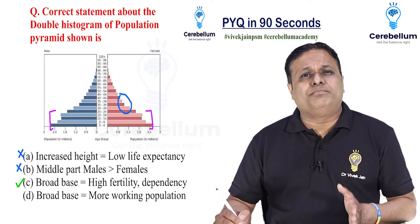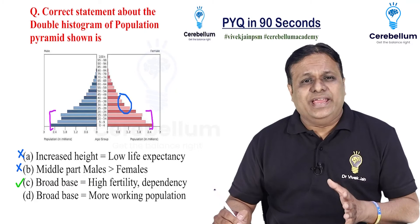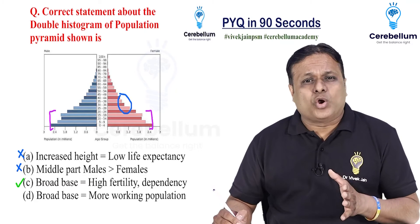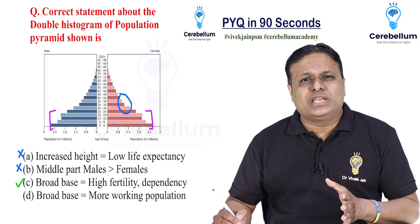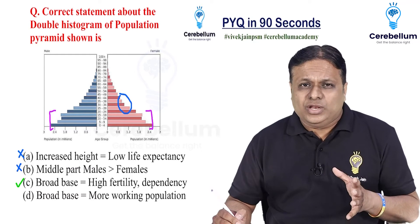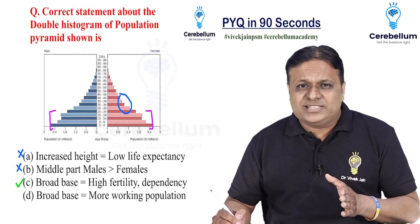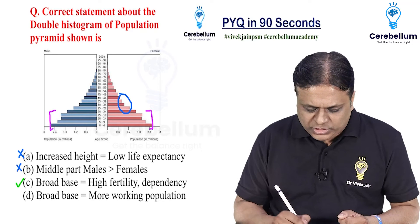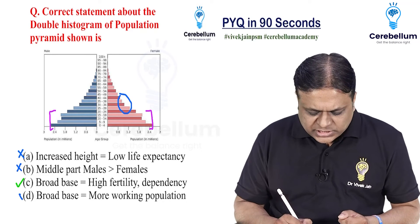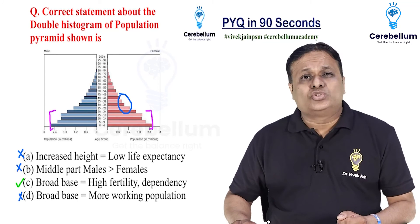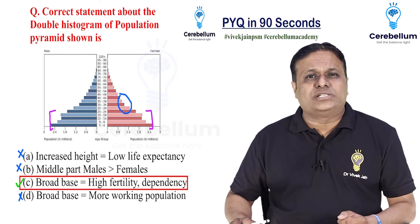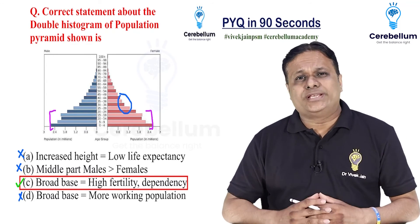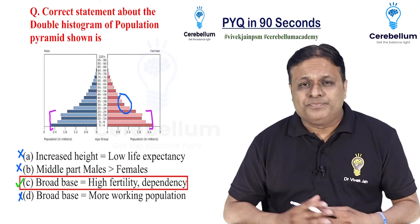Look at choice number D. It says broad base means more working population. No — young age is dependent on the working population, so this is incorrect. The answer to this question is choice number C.